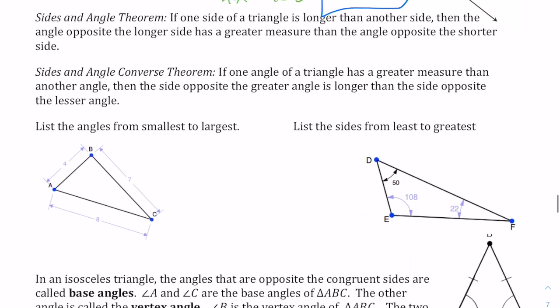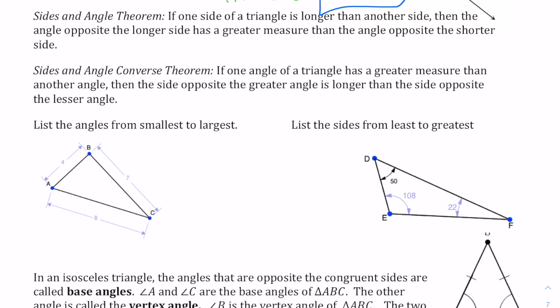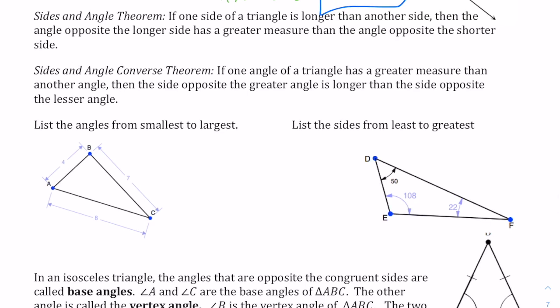These next two theorems you also looked at in your activities. If one side of a triangle is longer than another side, then the angle opposite the longer side has a greater measure than the angle opposite the shorter side. Looking at this triangle, the longest side is 8, the shortest is 4, and the medium is 7. So the largest angle is across from the side of 8, the medium angle is across from the 7, and the smallest angle is across from the 4.